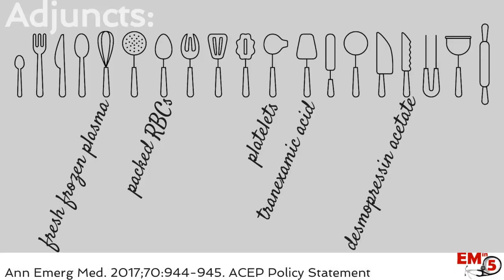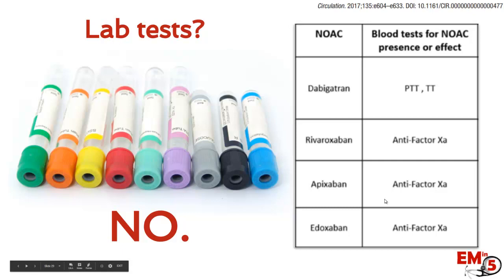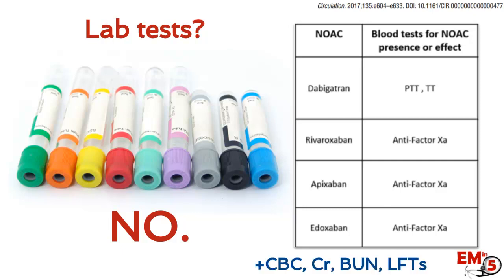If you don't have PCC available, remember there are other adjuncts out there — all worth trying, especially in the case of a life-threatening bleed. As for blood tests for the NOACs — to tell us how likely the patient is to bleed or which NOAC they're on — the simple answer is no. Dabigatran might have a small effect on PTT, but not in a reliable way, and everything else won't come back quickly enough to be helpful in the emergency room. So send your basic labs, but there's nothing special for the NOACs.